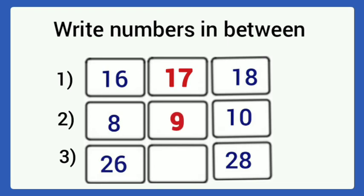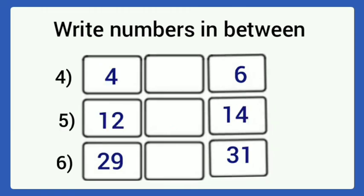Next one: 26 and 28. Which number comes in between? 27. Next one: 4 and 6. Which number comes after 4 and before 6? It is 5. Next: 12 and 14. Which number is missing here? It is 13.